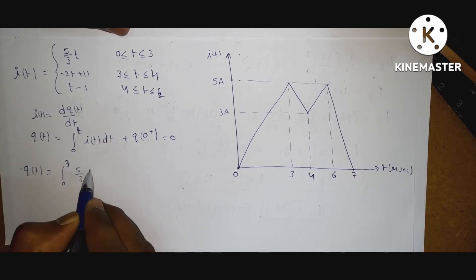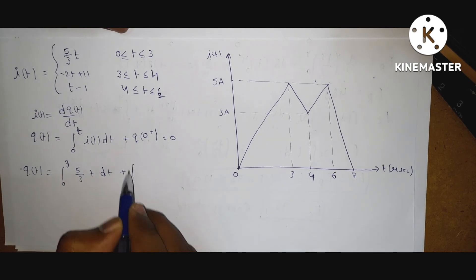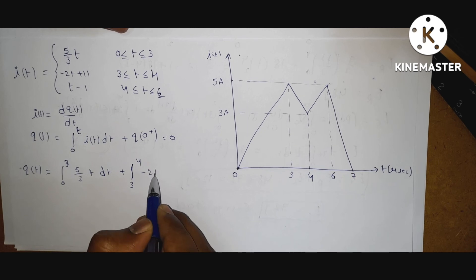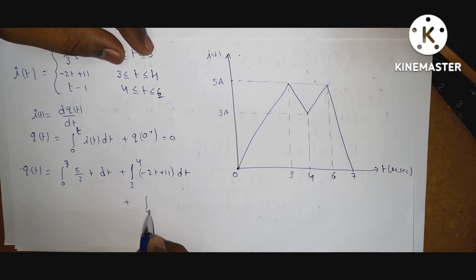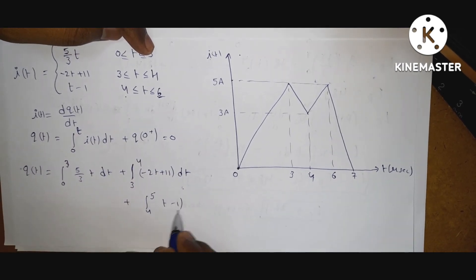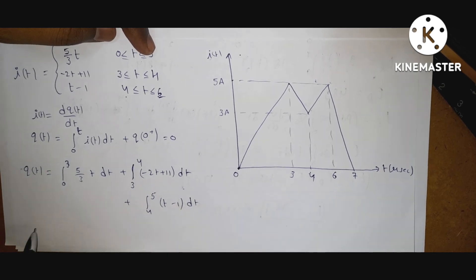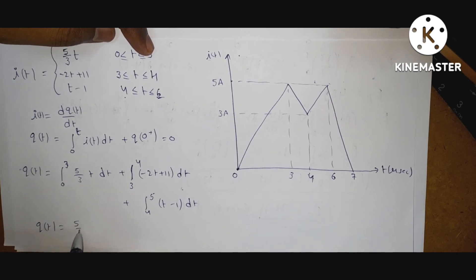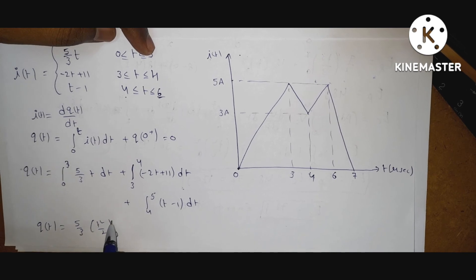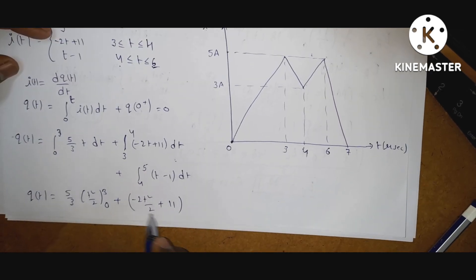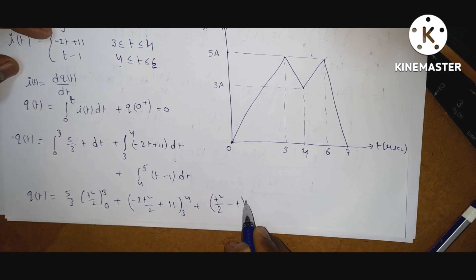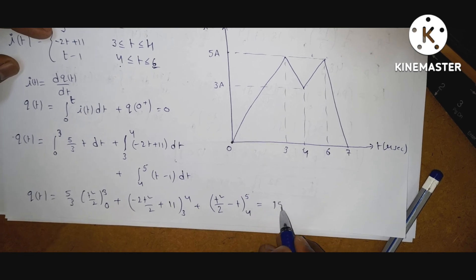Q(t) equals: from 0 to 3, (5/3)t dt, plus from 3 to 4, (minus 2t plus 11) dt, plus from 4 to 5, (t minus 1) dt. Solving: (5/3) into t²/2 from 0 to 3, gives values; plus t²/2 minus t from 4 to 5. If you apply the limits and solve this equation, you will get 15 microcoulombs, because time is in microseconds.